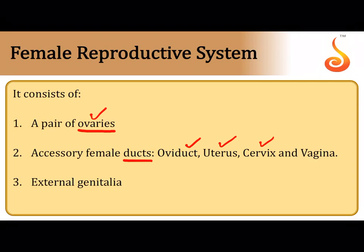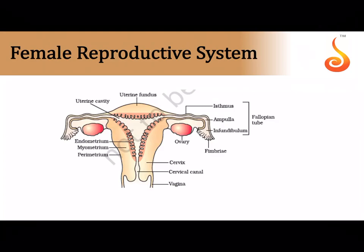The vulva constitutes the external genitalia, where you can see the openings of the urethra and the vaginal orifice. The vaginal orifice is guarded by a delicate tissue called the hymen and surrounded by folds of tissue called the labia majora and labia minora.